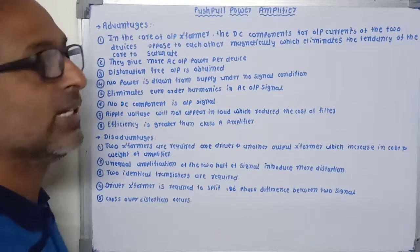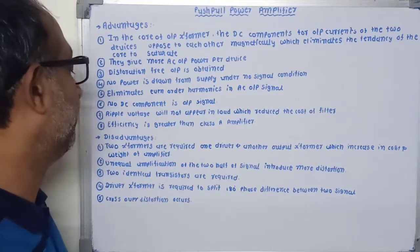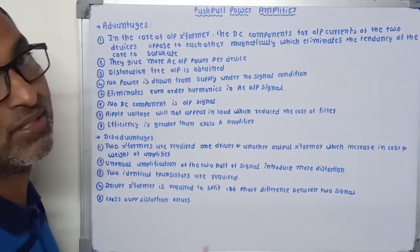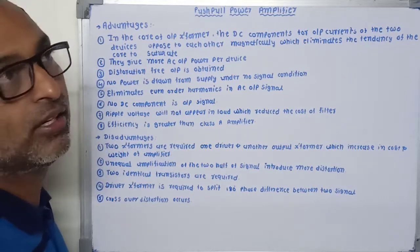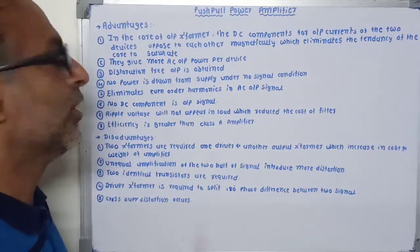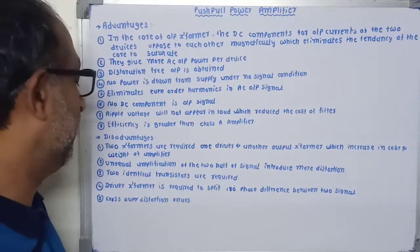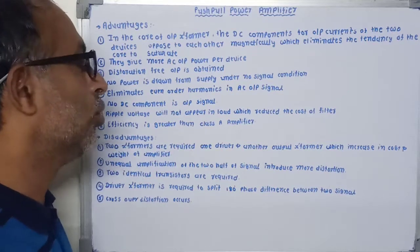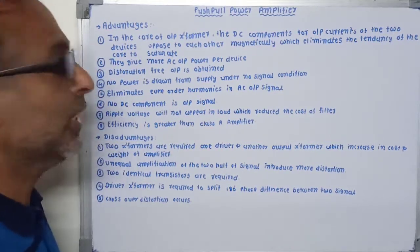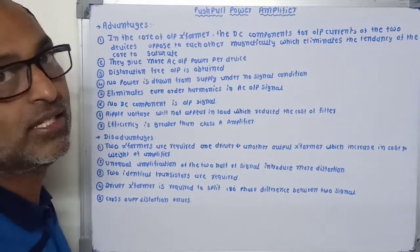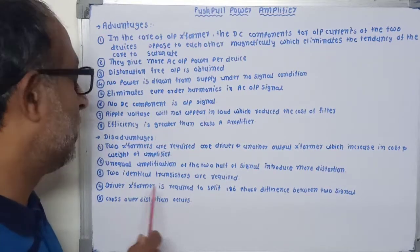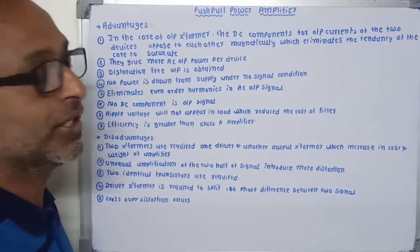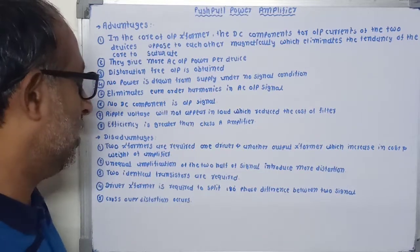Disadvantages of push-pull power amplifier. First, two transformers are required — one driver transformer and one output transformer — which increases the cost and weight of the amplifier. Second, unequal amplification of the two halves of the signal introduces more distortion in the output, and for that, two identical transistors are required. Third, a driver transformer is required to split the signal 180 degrees out of phase. And crossover distortion occurs.